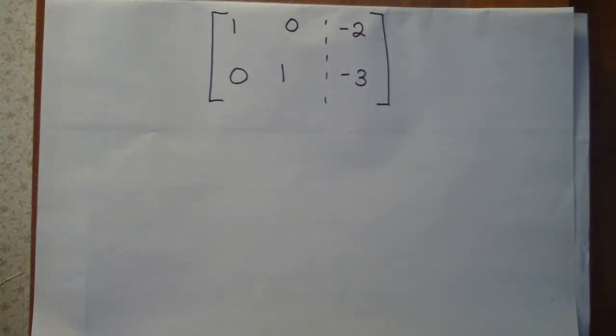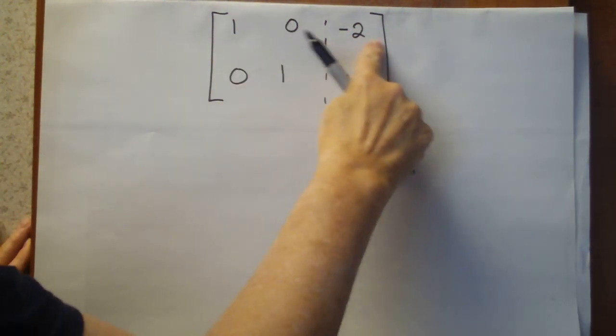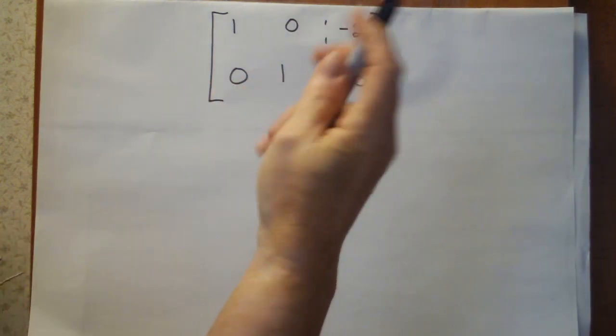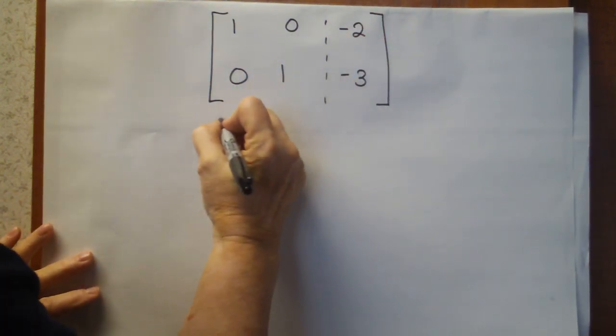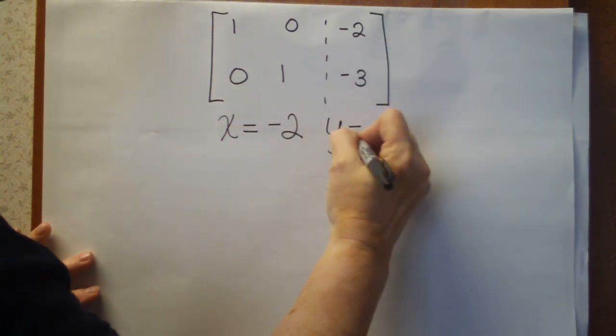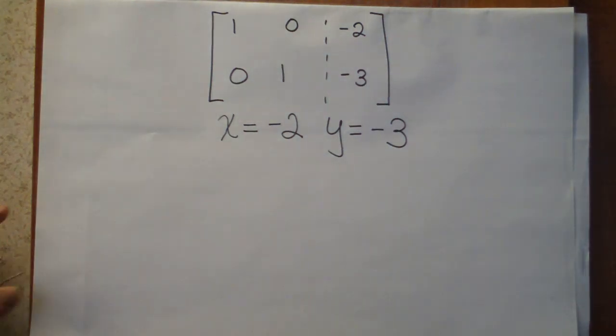Alright. Here's our top equation now, 1, 0, minus 2. This is the one we just figured out. This is the one we already had. And now we can read the answers. x is equal to minus 2 and y is equal to minus 3. And, of course, we can go back to the original equations and check that result.